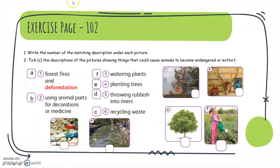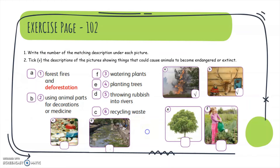Now circle the descriptions of pictures showing things that could cause animals to become endangered or extinct. The answers are: A — forest fires and deforestation, B — using animal parts for decoration or medicine, and D — throwing rubbish into rivers. So you can circle A, B, and D.